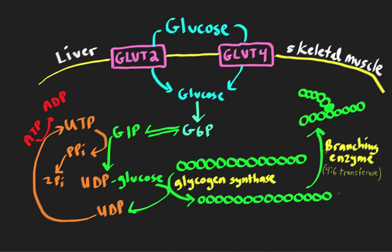Branching enzyme is highlighted because individuals can be born with a defect in this enzyme, which is one of the glycogen storage disorders. It's called Anderson's disease, or glycogen storage disease type 4. Those individuals have linear glycogen chains that are insoluble, causing liver dysfunction and eventually liver failure. The reason these enzymes are listed is that they're either highly regulated or sites of disorders — these are the two key enzymes to focus on in the glycogen synthesis pathway.